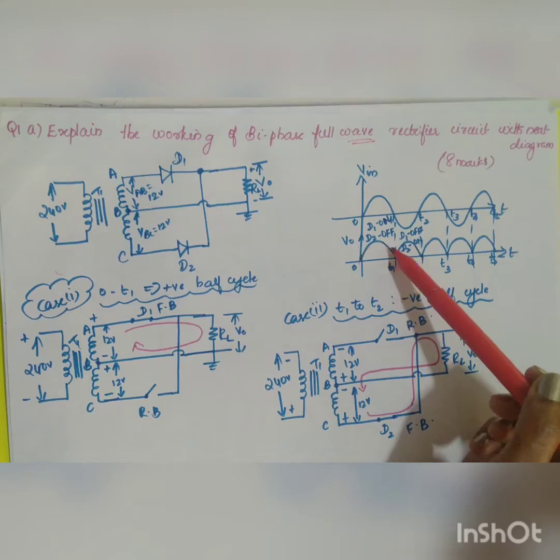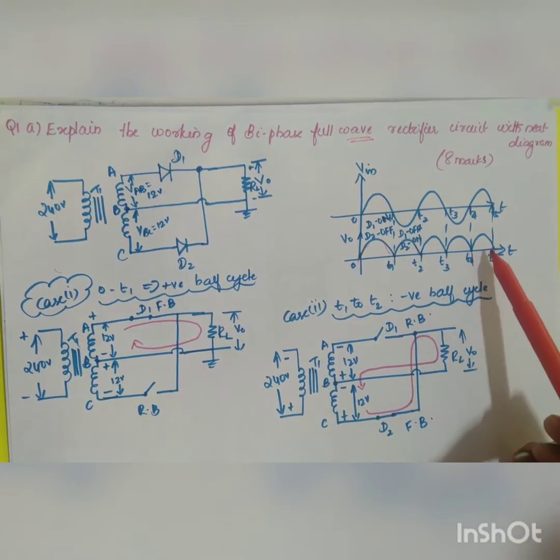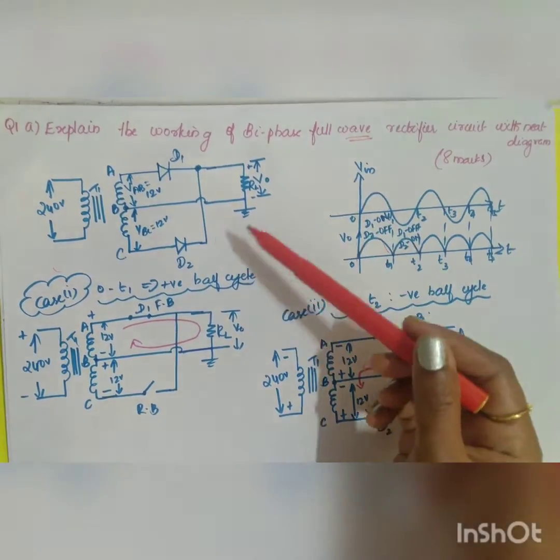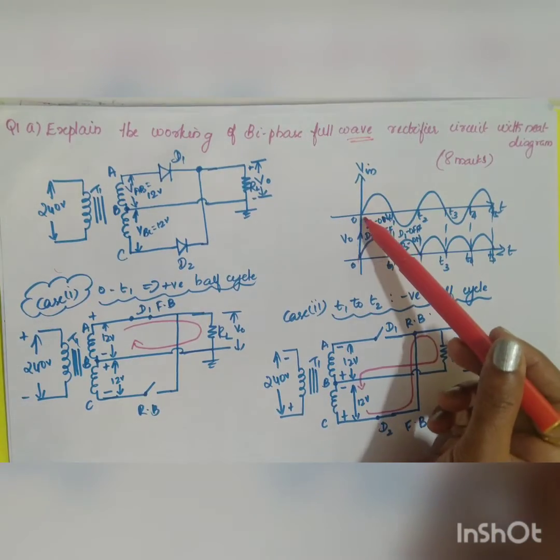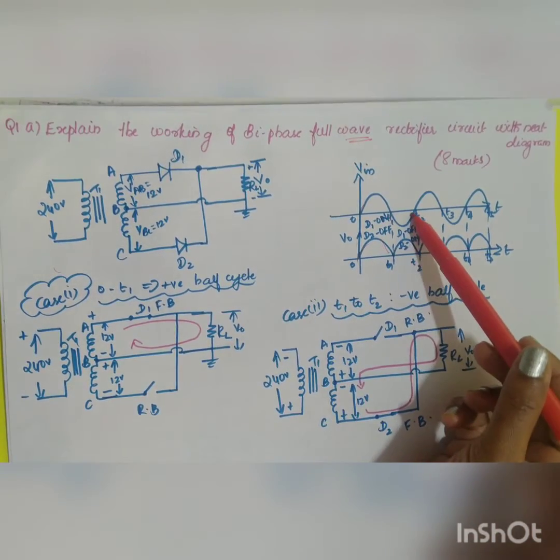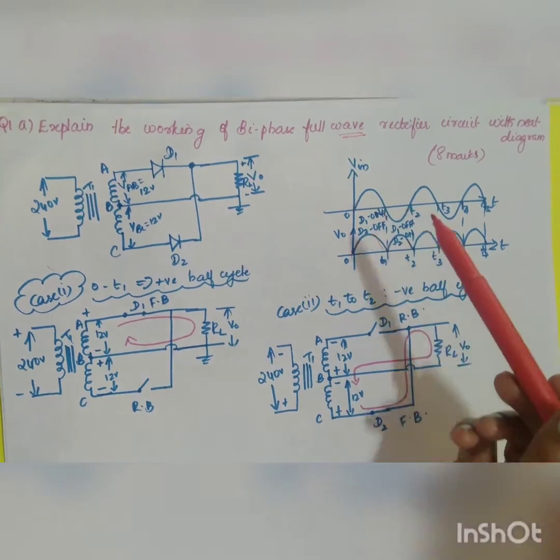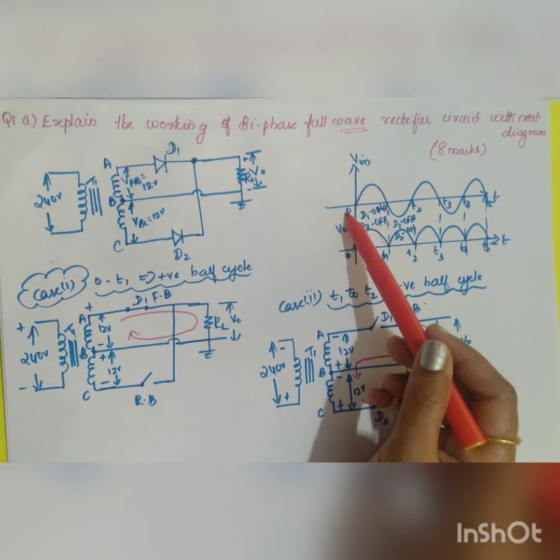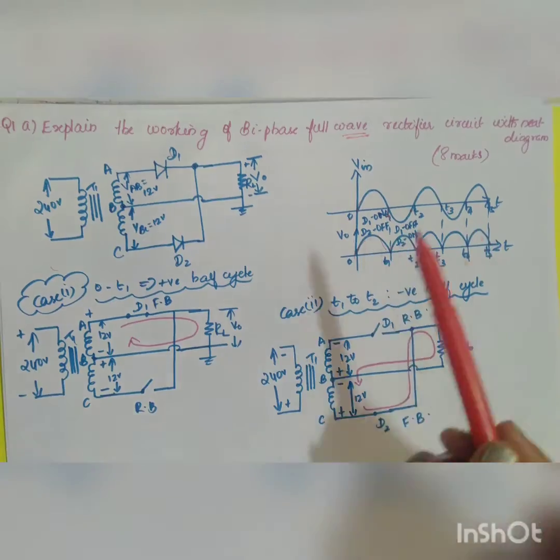You have to write the working principle. We have two cases: during the positive half cycle and during the negative half cycle of the input signal. During the positive half cycle, from time period 0 to t1, what will happen to the circuit?